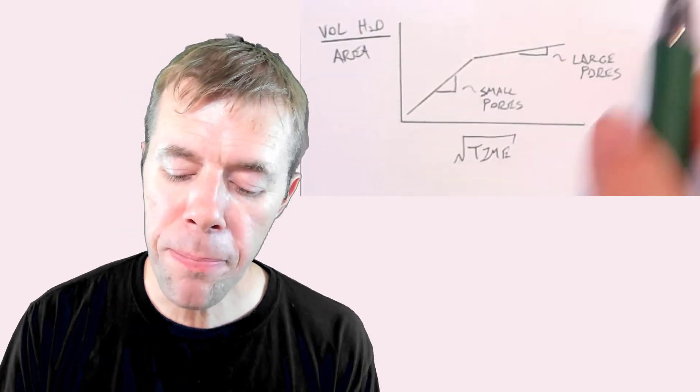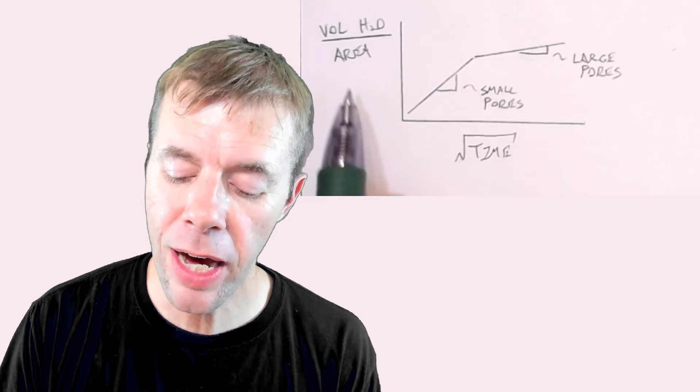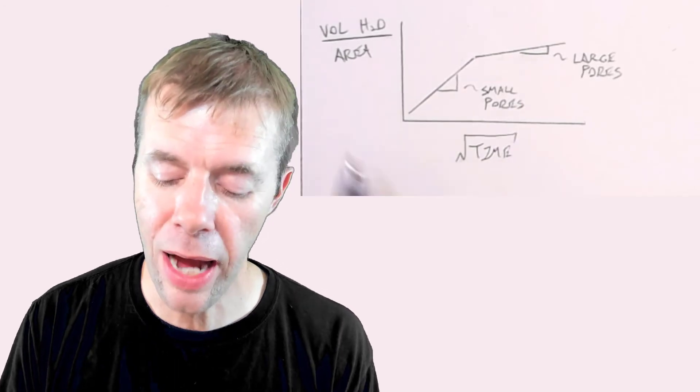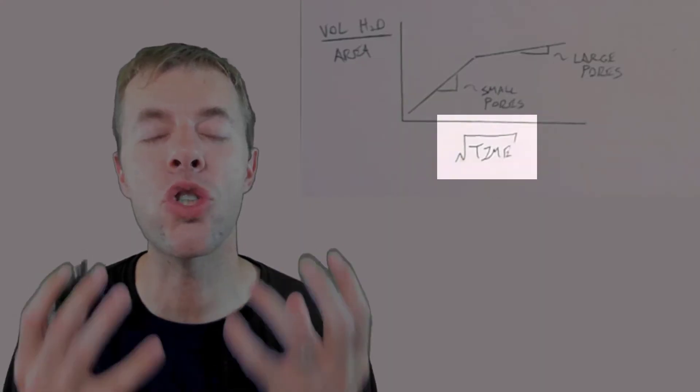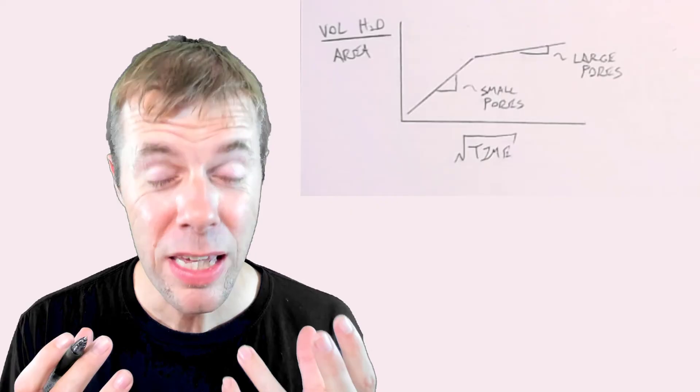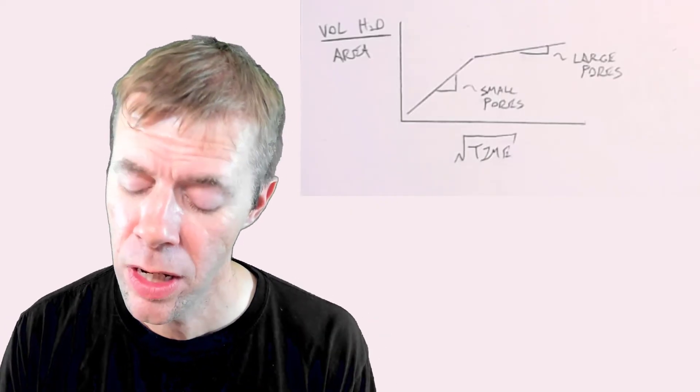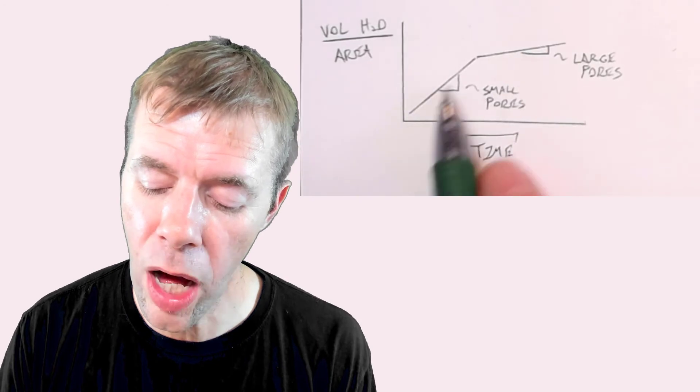Then there'll be a secondary front where this back end starts to fill up. Now, if we plotted the volume of water divided by area on the y-axis, and on the x-axis, we have the square root of time. Yep, the square root of time.